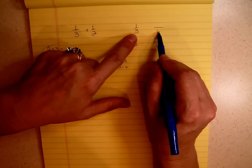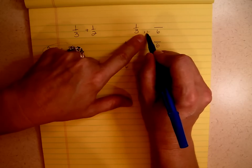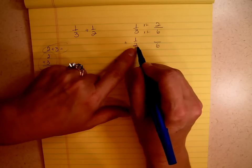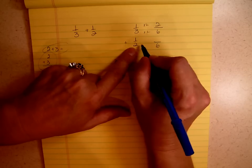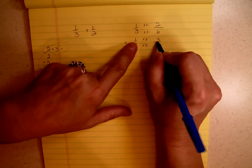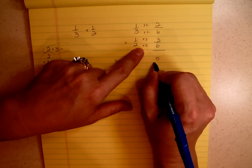What do I have to do to make it six? I have to multiply it by two. And whatever I do to the denominator, I have to do to the numerator. So one times two is two. What do I do to two to make it six? I multiply it by three. So I multiply my numerator by three. So I have two-sixths plus three-sixths. My answer is five-sixths.